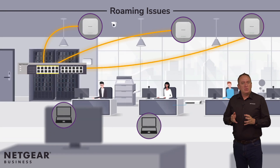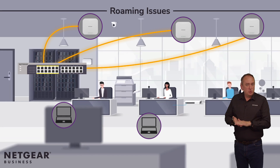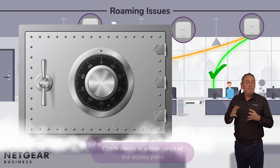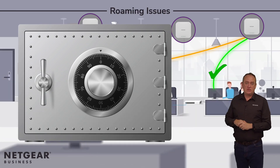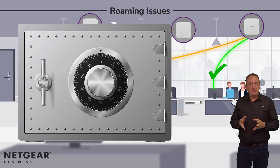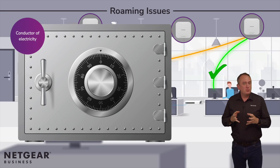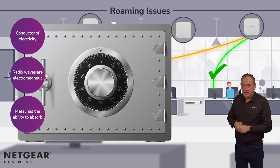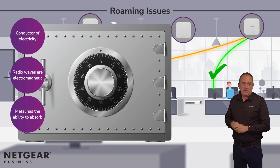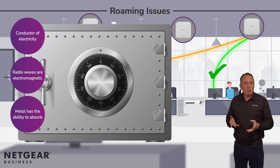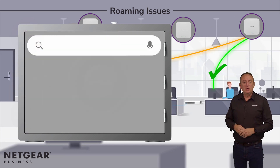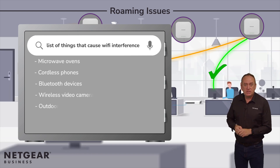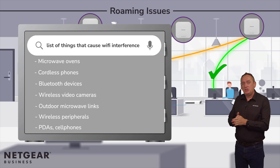There are some more obvious checks to be done, such as making sure your Wi-Fi device is within the range of the access point and there are no physical obstacles blocking the signals. Metal is the worst offender for blocking Wi-Fi signals, primarily because it's a conductor of electricity — and because radio waves are electromagnetic, metal has the ability to absorb them. Check for interference from electronic devices operating on the same frequency. Verify the router and the access points are configured using the correct wireless mode and channel.